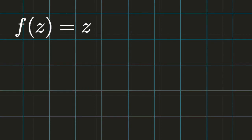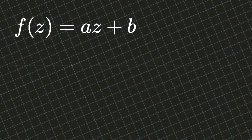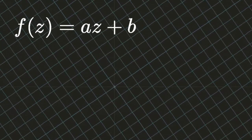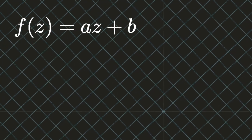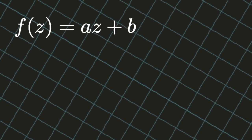Let's first of all consider functions which map the entire complex plane into itself. As a trivial example, consider the identity function f of z equals z. A more interesting example is given by the function f of z equals a times z plus b, where a and b are complex numbers. Geometrically, this function corresponds to a rotation, a scaling, and a translation.